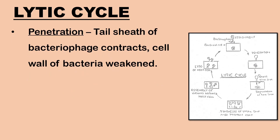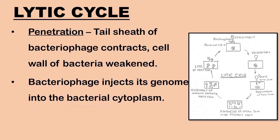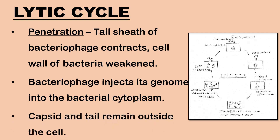The second step is penetration. The tail sheath of the bacteriophage contracts; the base plate and tail fibers are held firmly against the bacterial cell. A bacteriophage enzyme weakens a part of the cell wall and makes a hole in the bacterial wall. The hollow core is pushed downward and the bacteriophage injects its genome into the bacterial cytoplasm. The empty head or capsid and the tail remain outside the cell.